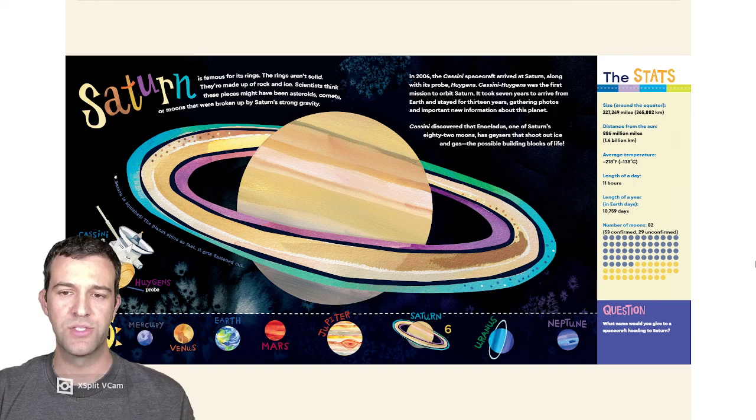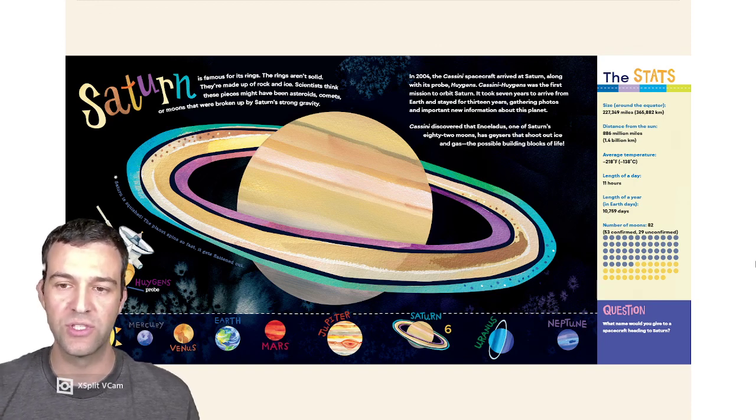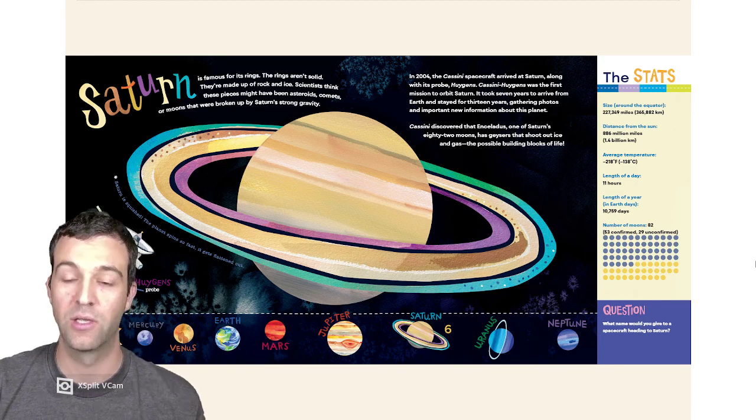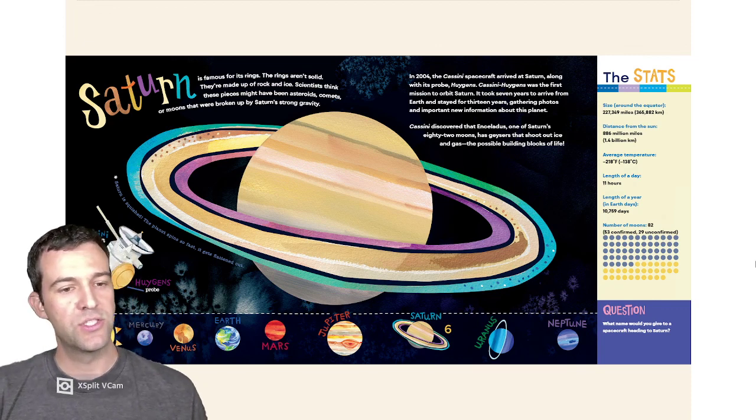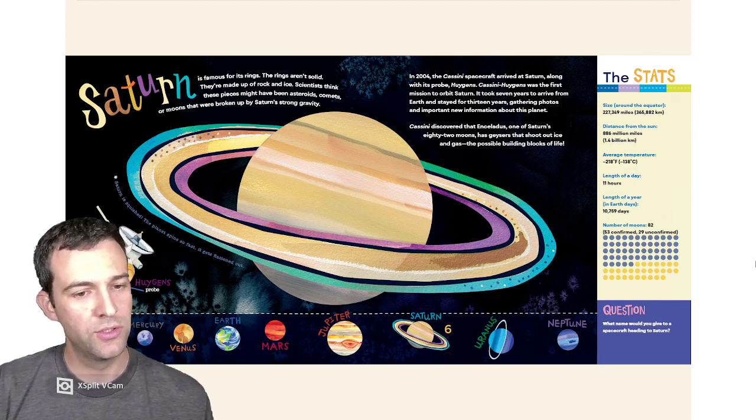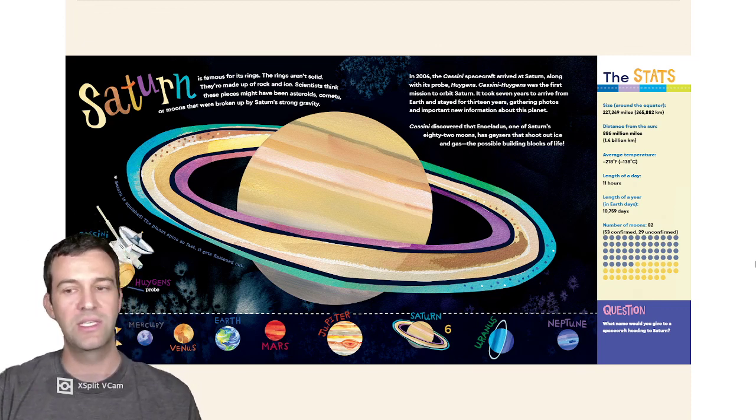Cassini discovered that Enceladus, one of Saturn's 82 moons, has geysers that shoot out ice and gas, the possible building blocks of life. Saturn is squashed. The planet spins so fast it gets flattened out.